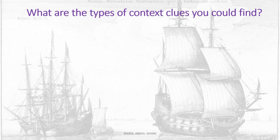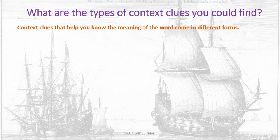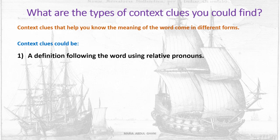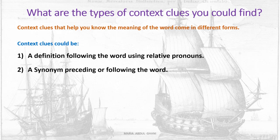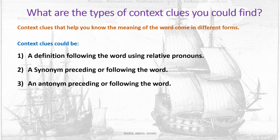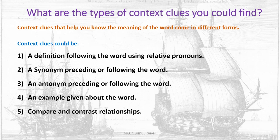What are the types of the context clues you could find? Context clues that help you know the meaning of the word come in different forms. Context clues could be: a definition following the word using a relative pronoun, a synonym preceding or following the word, an antonym preceding or following the word, an example given about the word, or compare and contrast relationships.